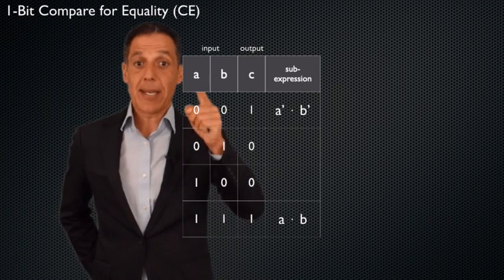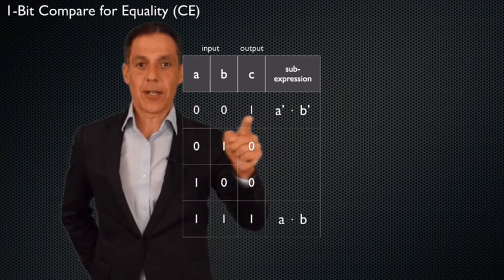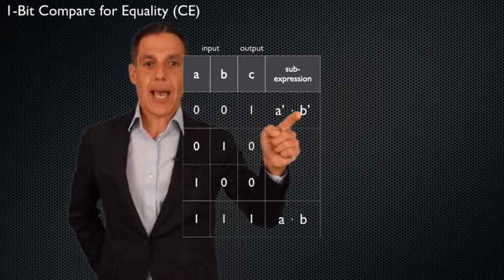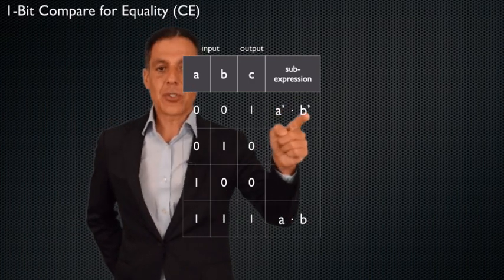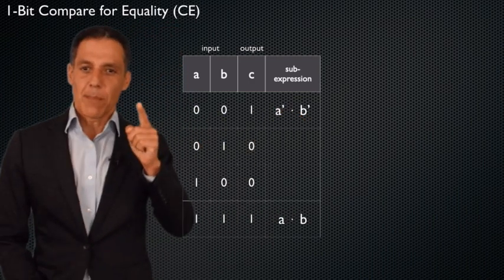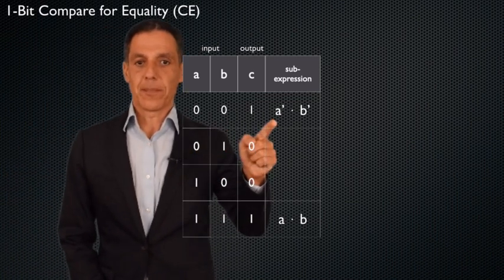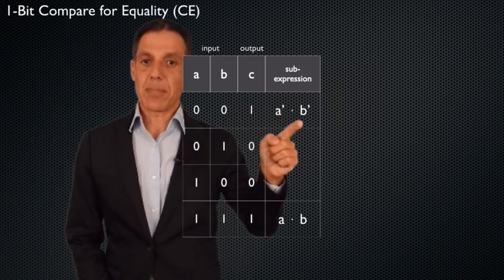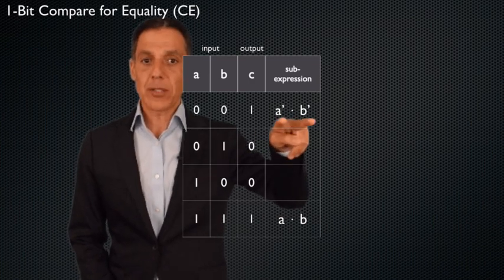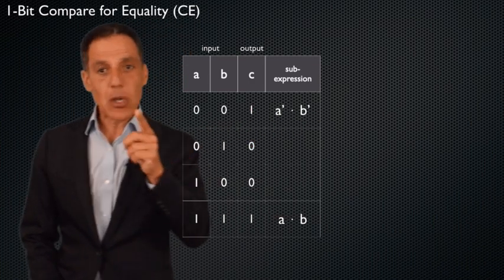Alright, so there's a one here and a one here. So this is the only place I have a sub-expression. So what do I do? I go back to the input. That's a zero. So I not A. There it is right there. That's a zero. So I not B. I and those two together and again remember that why this works because when A is zero, not A is one. When B is zero, not B is one. So when I and one and one, I get one.